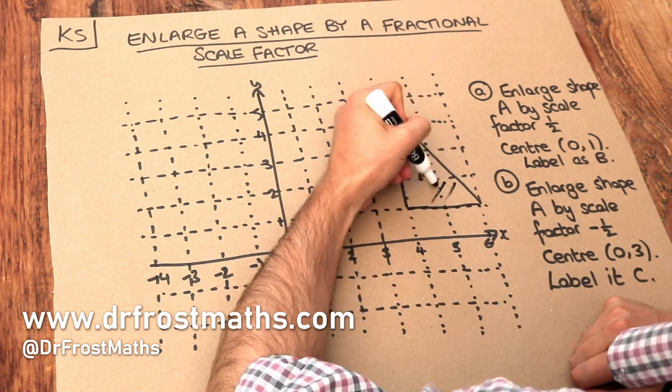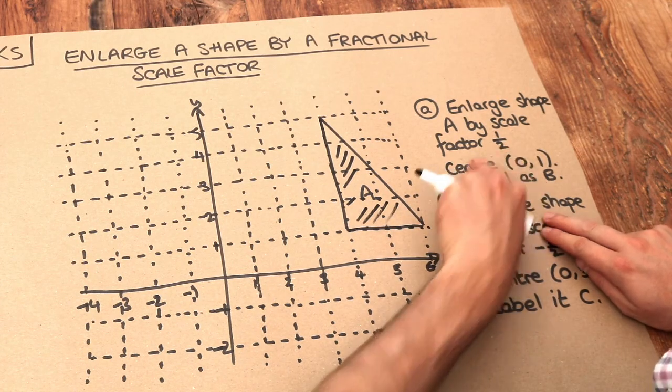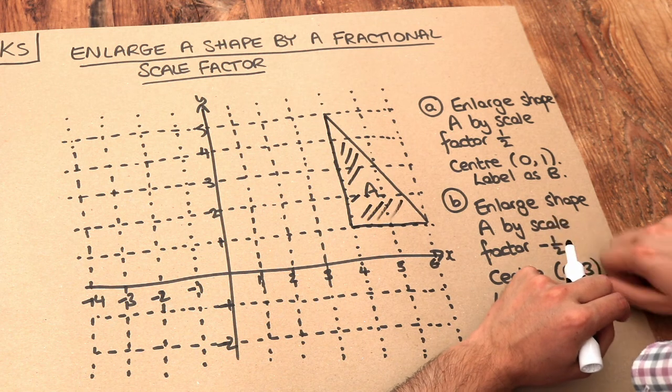We've got this shape here, A, and we want to enlarge this shape by a scale factor of half with centre of enlargement (0,1). We want to label this new shape as B.